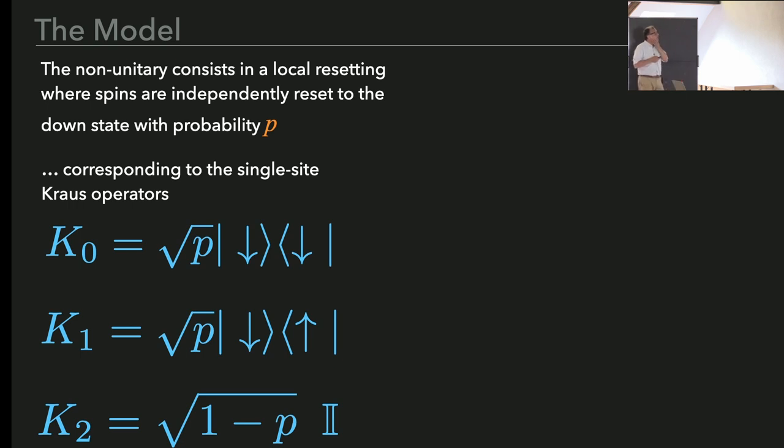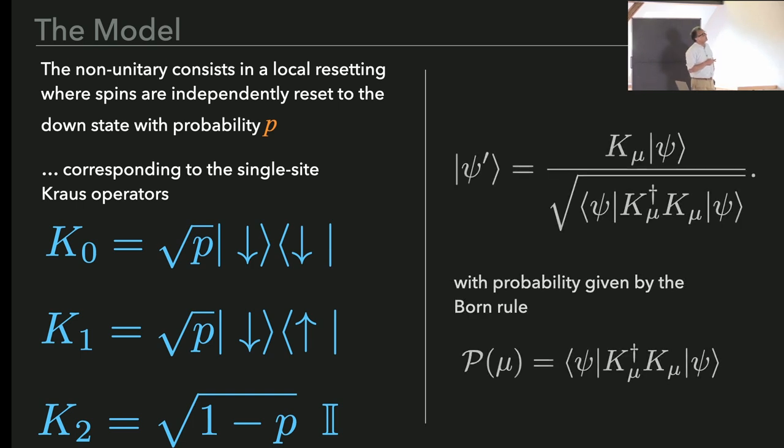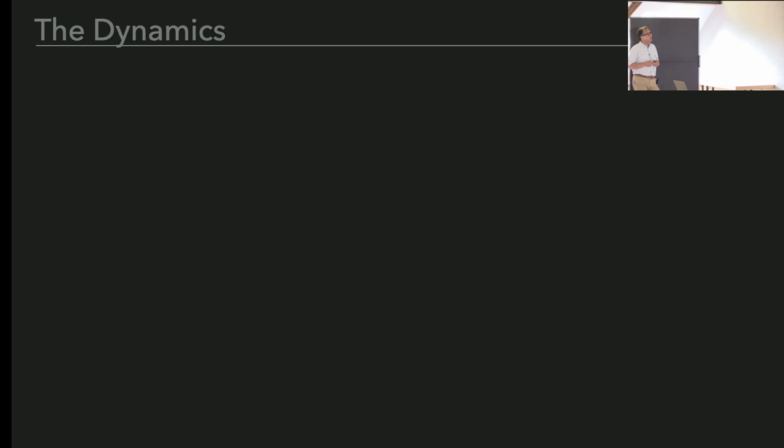Then I have to tell you about the non-unitary parts. For the non-unitary parts, we just consider the case in which we have local resetting, which essentially means that with a given probability p, if the local state is down, this will not be touched, but if it's up, then it will be flipped. These are the three corresponding Krauss operators that will just define the dynamics. Essentially this is the dynamics we have to follow. These are all the ingredients, so from now on I will present you the results.